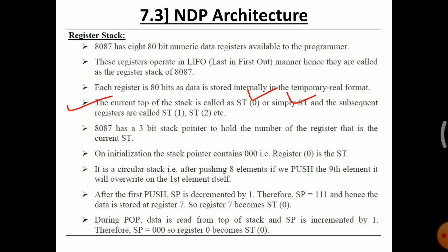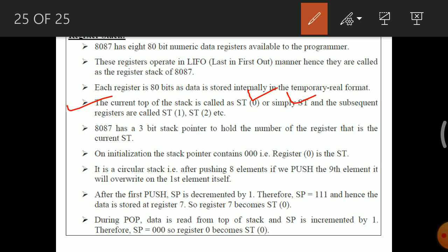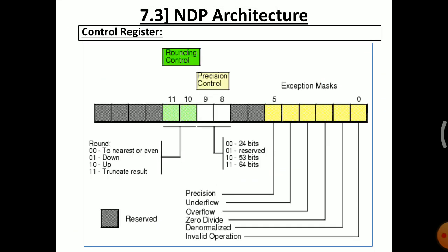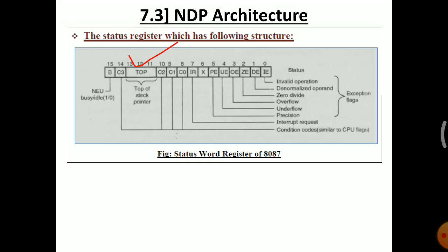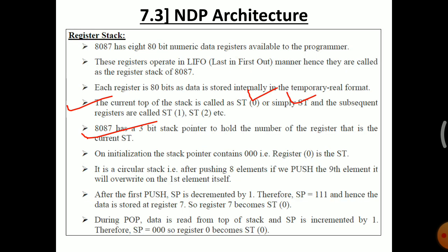The 8087's 3-bit stack pointer holds the number of the register currently at the top of the stack. These are the top bits (bits 11, 12, and 13) in the status register. When the stack pointer is decremented by one from 000, it becomes 111, indicating register 7 is now the stack top. This is how the register stack is maintained in the Numeric Execution Unit (NEU) of the 8087 NDP architecture.